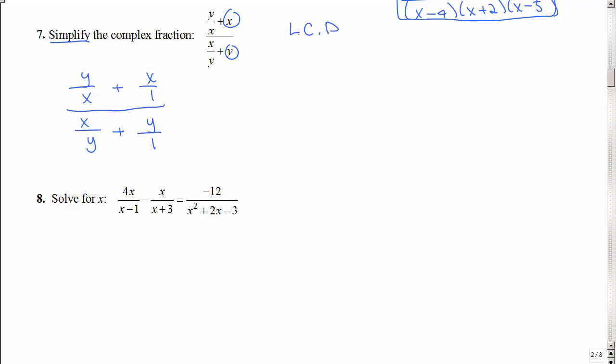Now I need to find the least common denominator out of the whole big picture. Well really, I have an x, a y, and a 1, so the LCD is xy. So I'm going to multiply the numerator and the denominator by the LCD, and that's really multiplying by 1.